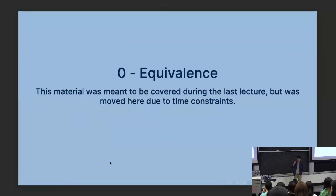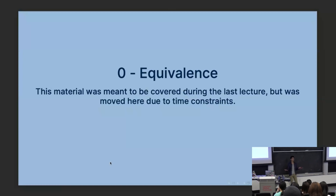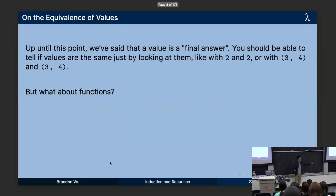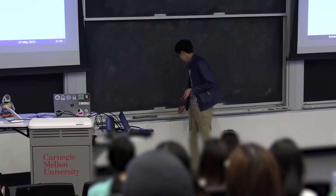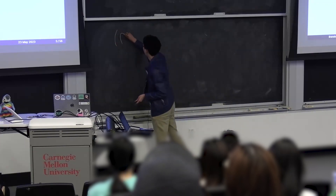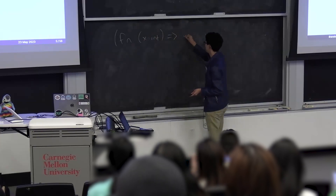On to the new stuff — there was some stuff I didn't cover last lecture that I wanted to get to. So this is part zero: equivalence. A value is a kind of final answer; when I have a value, I can't simplify it. That makes sense for things like two or the Boolean true. But what about functions? How do I simplify a function? If I have something like fn x: int => x + x, or better yet, two plus two — can I simplify this function value, this lambda?